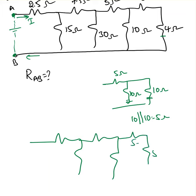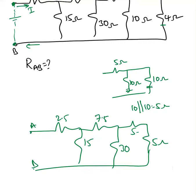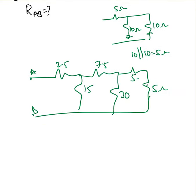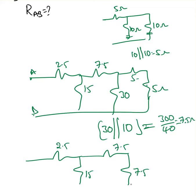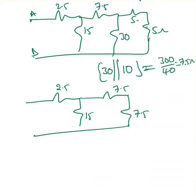In the redrawn circuit I have: 5 ohm, 5 ohm, 37.5, 15, 2.5, and the A-B terminals. These two are in series, and that series combination is in parallel with the 30 ohms. So 30 parallel with 10 equals 300 over 40, which is 7.5 ohms. Now I have 2.5, 15, 7.5, and 7.5.